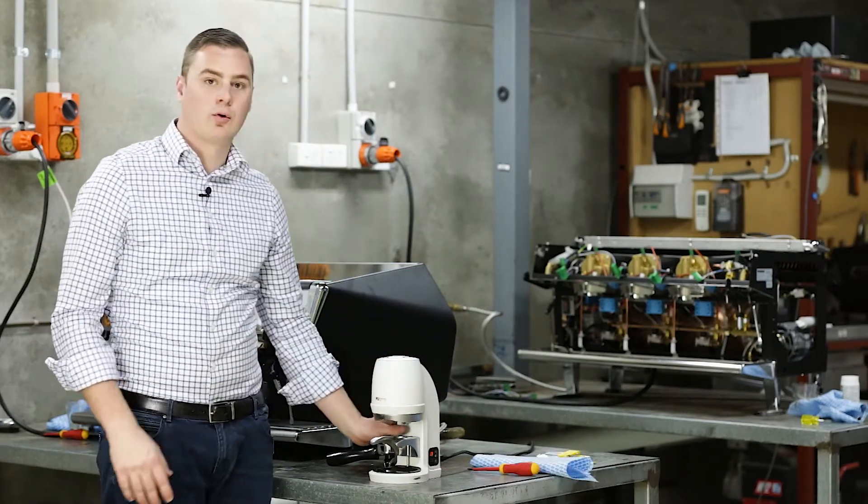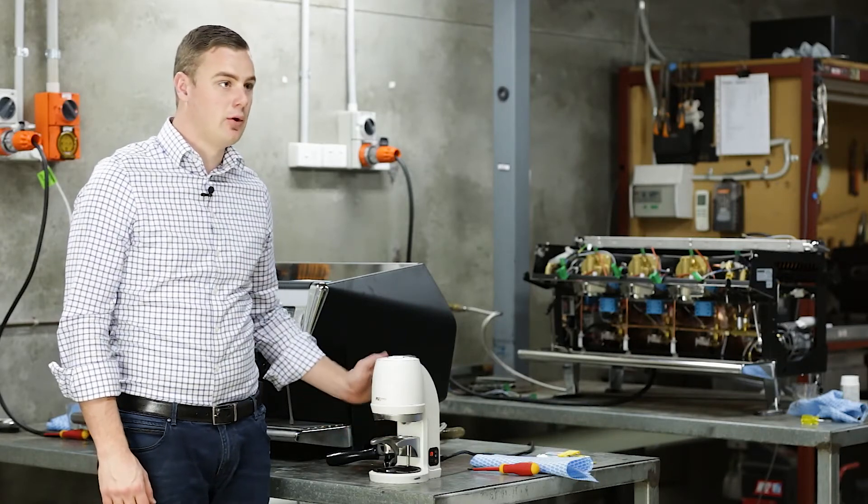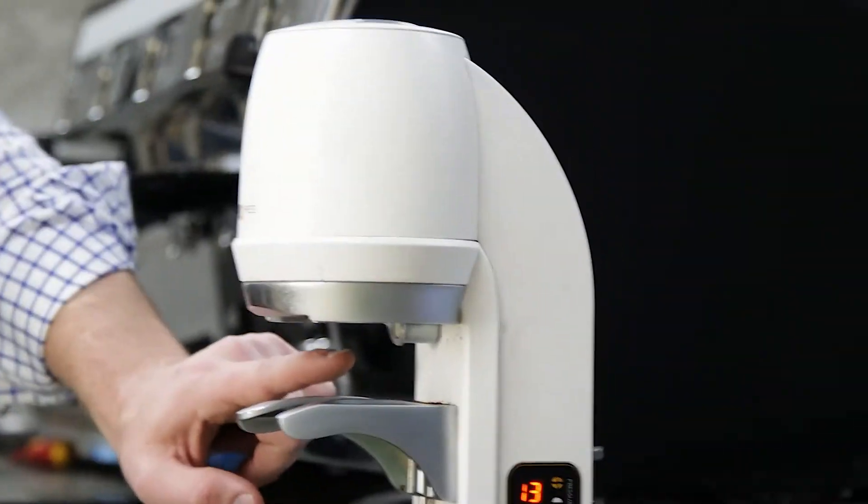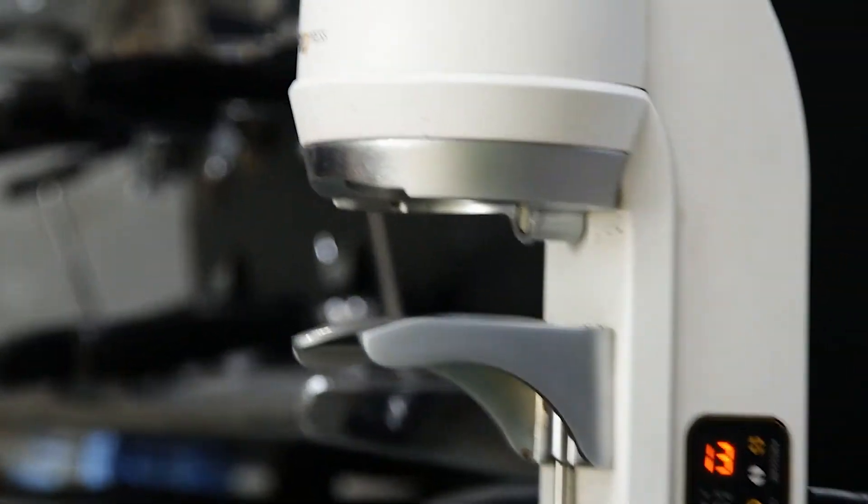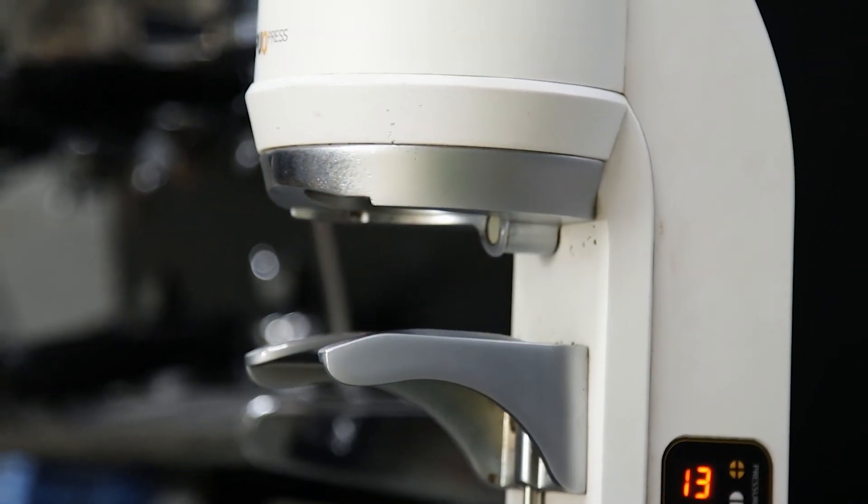So the other thing that could be stopping the handle from recognizing and activating the unit is you might have a dirty sensor. So you just want to make sure that that's always kept clean and you give it a wipe with a dry rag at the end of each day.